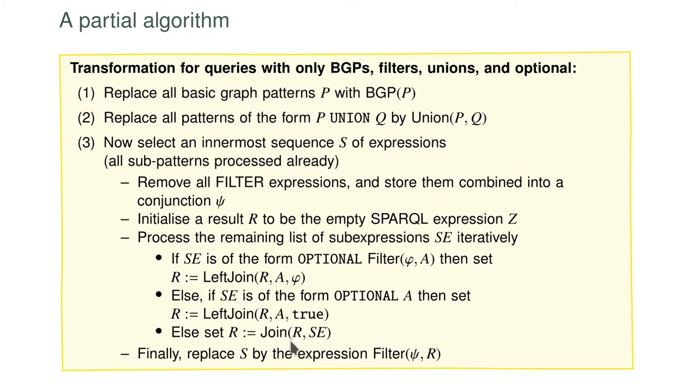Alternatively, if the sub-expression is just an optional with an algebra expression inside without any filtering — maybe it's a union, maybe it's a BGP — then we just take this algebra expression, put it into left join, and put true as a filter condition so we don't filter here. In all other cases we just join the current R, starting with the empty expression, to the next sub-expression we find, which could be something like BGP or union. You can see how the scope of optional has a lot to do with the order in which things are processed — the optional always refers to all the patterns that have been processed so far.